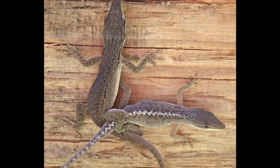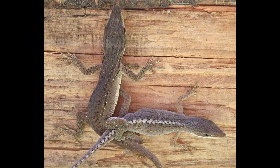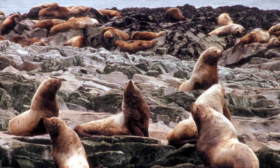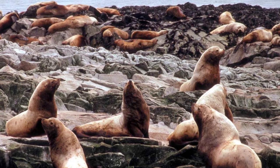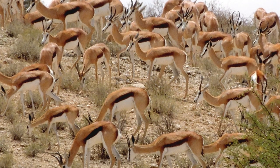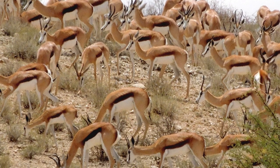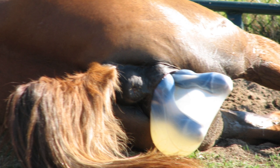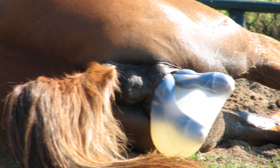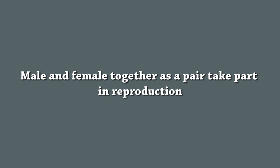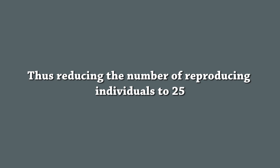Whereas in animals reproducing sexually, the situation is totally different. In a population of a particular species numbering 50, there are 25 males and 25 females. Each one can produce two young ones at a time, giving a total of 50 young ones at a given time. The sexes are separate, and male and female together make a pair and take part in reproduction, thus reducing the individuals to 25 pairs.